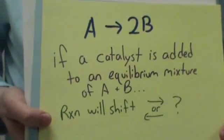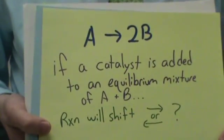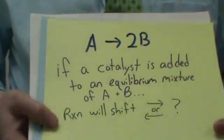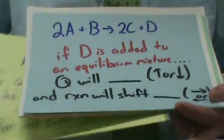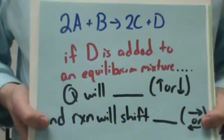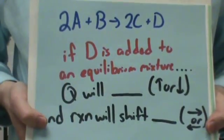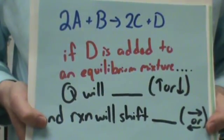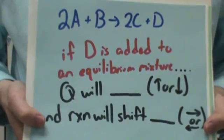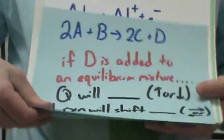If you add a catalyst, how will the reaction shift at equilibrium? No shift. If you add D, what will happen to Q and how will the reaction shift? Q would increase, which would cause you to shift to the left.